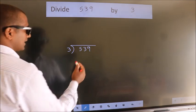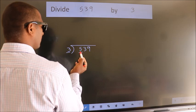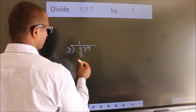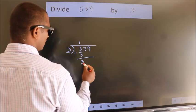Next, here we have 5, here 3. A number close to 5 in 3 table is 3 ones 3. Now, we should subtract. We get 2.